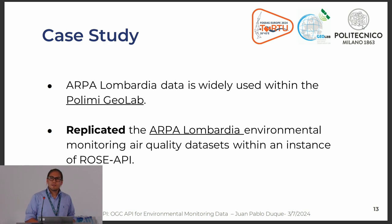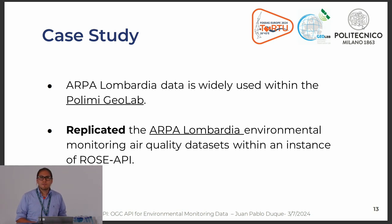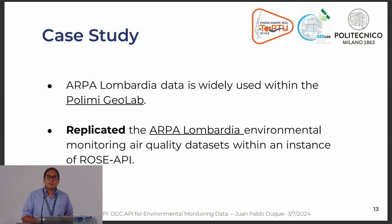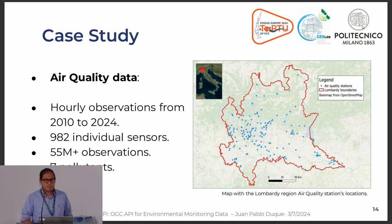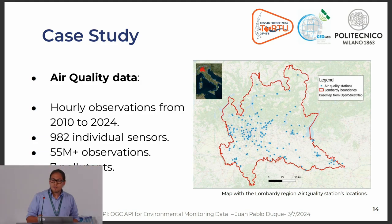For the case study, we used ARPA data, which is the environmental monitoring agency for northern Italy, the Lombardy region. We use it a lot at Politecnico, but every time a new researcher comes, they need to relearn everything. Also, the tables are sometimes not standardized or homogenized, the column names are only in Italian, and we have many international researchers. So we replicated the ARPA Lombardy Environmental Monitoring Air Quality datasets within an instance of ROSE API, with observations from 2010 to 2024 and around 1,000 individual sensors.